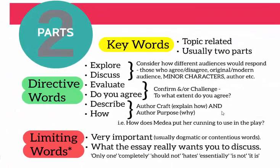You also want to think about the different parts of the question, because knowing those parts helps you understand what it's actually asking you to do. The key words in an essay question are usually topic-related — specific to the text you're talking about. There are usually going to be two parts: two themes, two characters, or an author part and a theme part. Really look at what part of the question is talking about the text in particular.